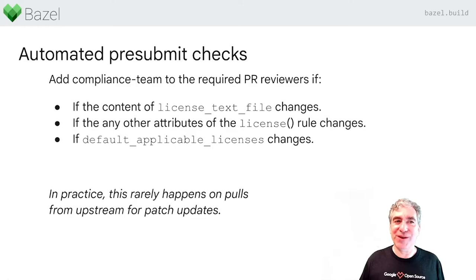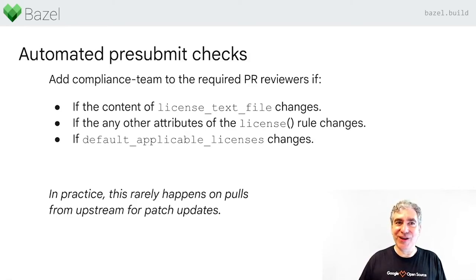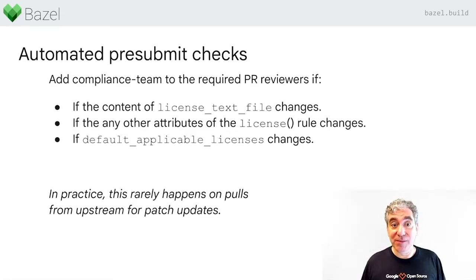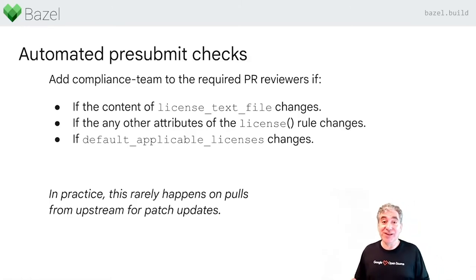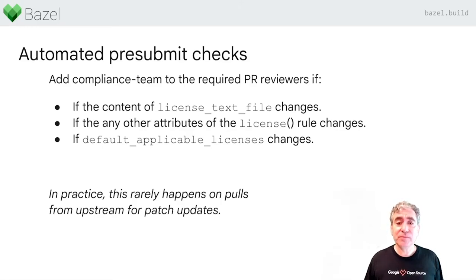Fortunately, you don't have to do this that often. We use our source code control system to help. We have metadata checks when you try to submit code. If we're changing the content of the license text file, or changing any attributes of a license rule in a package, or the package default changes, then our source code control system says it needs an additional reviewer and makes sure the compliance team is added. In practice, this just doesn't happen very often, because once people decide the license they want to make their code available under, they don't change it a lot. Most of the time they just add features, and if I want to import a new release to get new features, I can just do that.